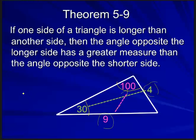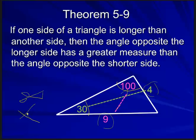Think of a pair of scissors. If the scissors are closed, the angle is small and the gap between the blades is smaller. But if you open it up so the angle gets bigger, the gap between the blades gets wider and longer — it's like a triangle. As we open up the angles, the side opposite gets longer. So the larger angle is going to have the longer side associated with it.